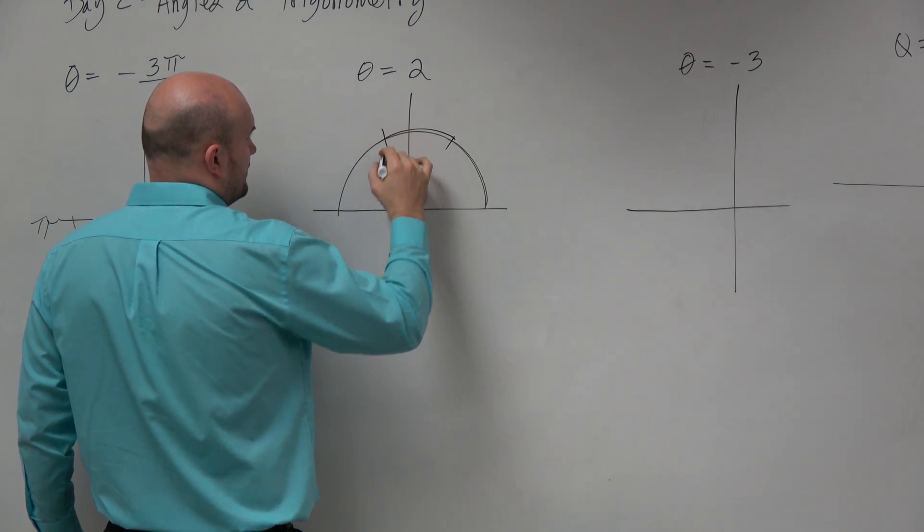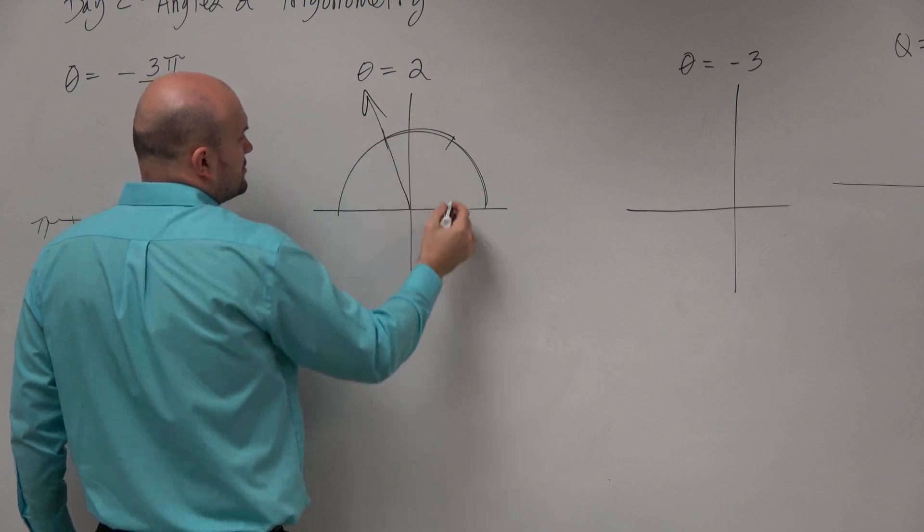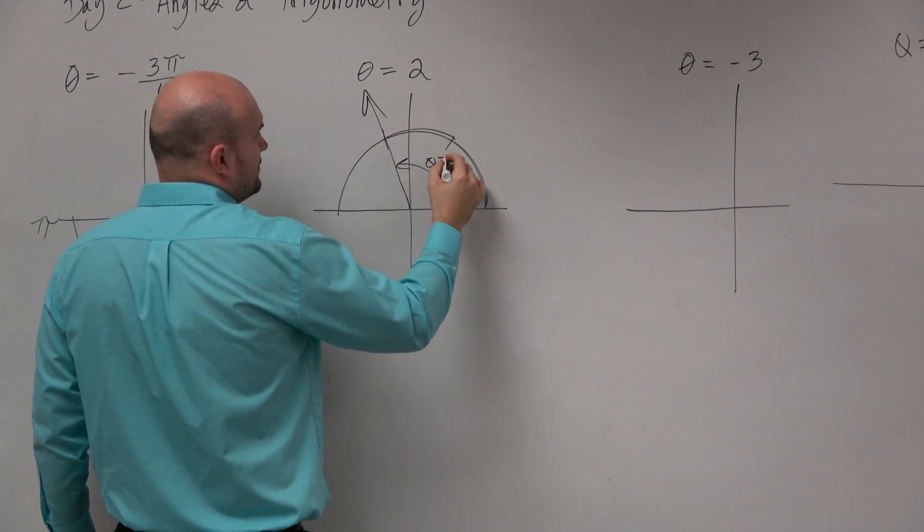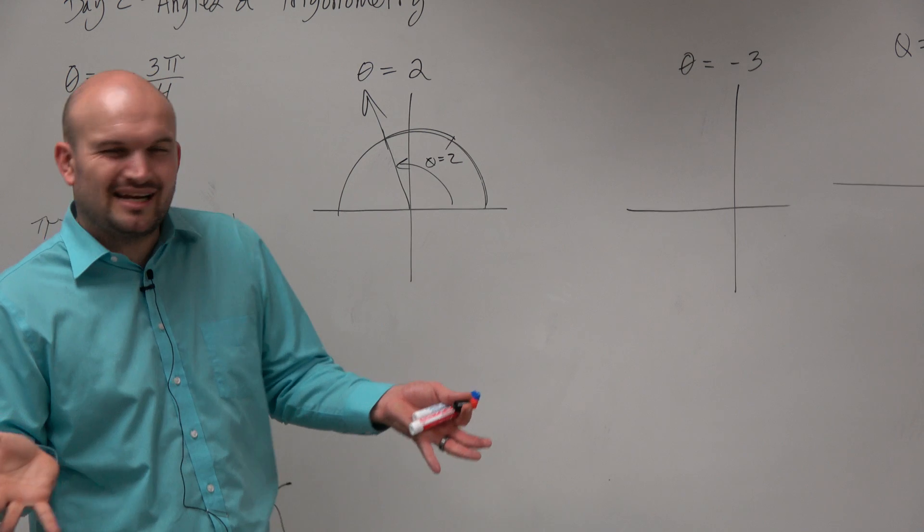There's one radian. There's two radians. So roughly we have theta equals 2 is roughly like there. It's in the second quadrant.